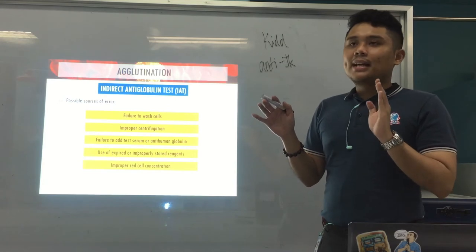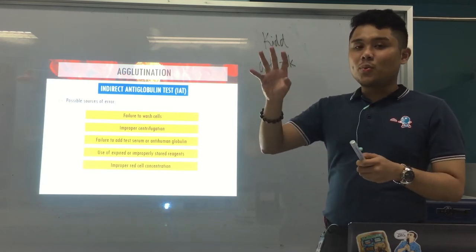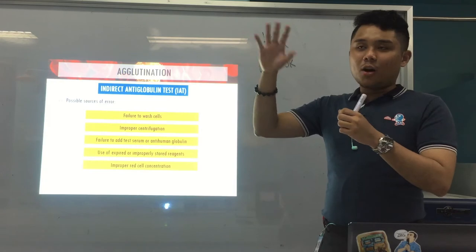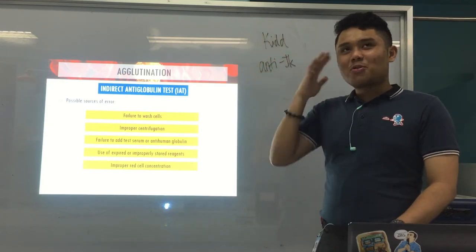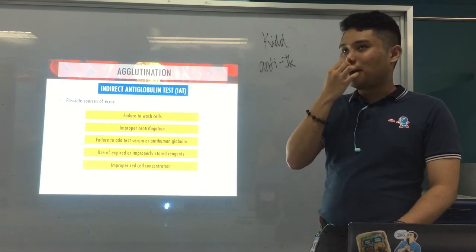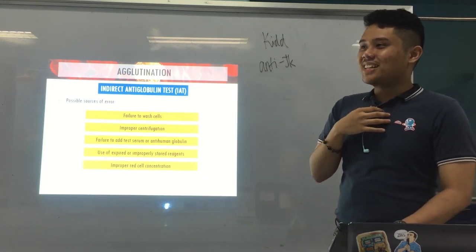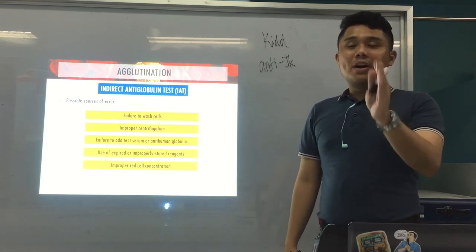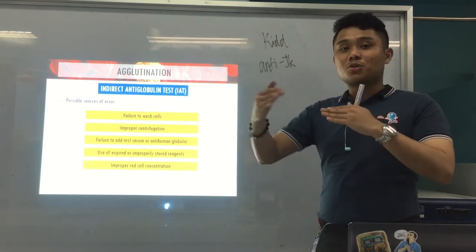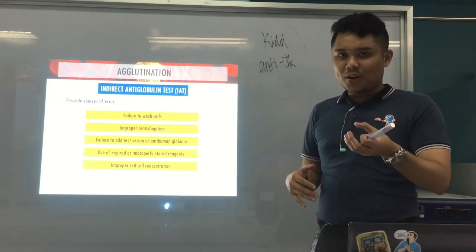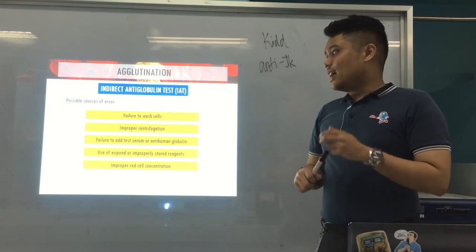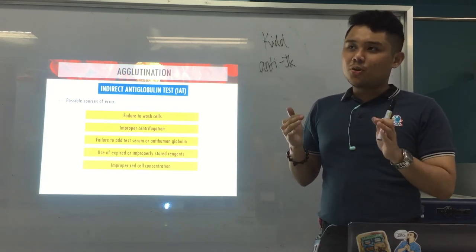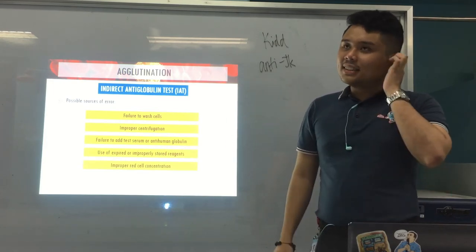It is in this 2 to 5 percent concentration that the proper ratio between your serum and your RBCs is maintained when testing. This ensures the correct ratio of RBCs to serum or antibodies during the test.